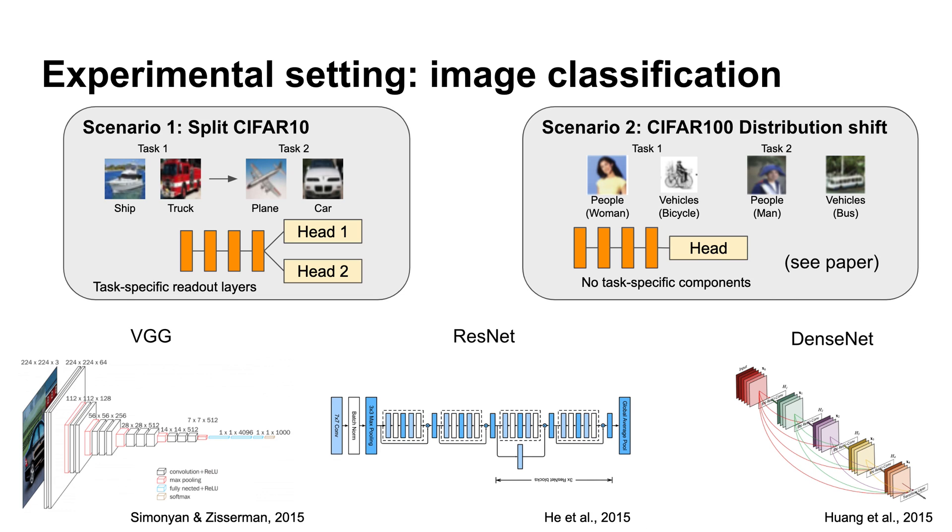Importantly, in this case, the task identity is known both during training and inference. So we use a standard multi-head setup in which there's a separate readout layer for each task.